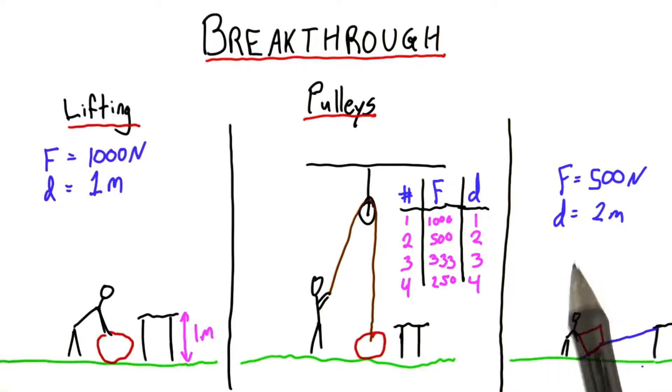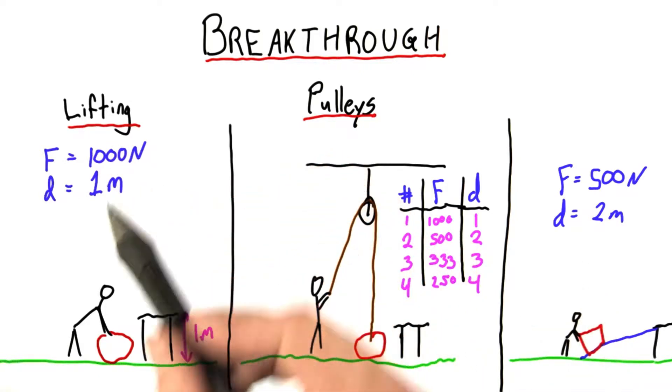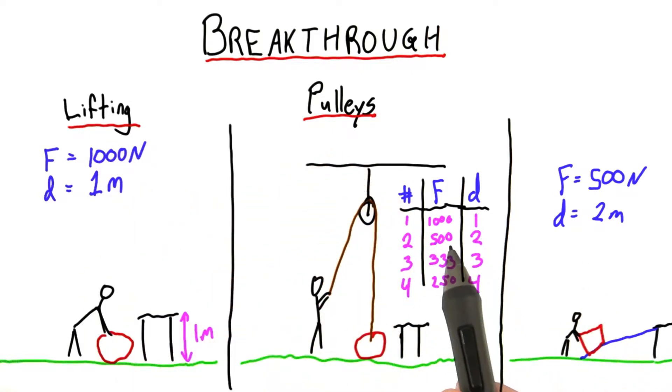There is a deep and fundamental pattern emerging here. 1,000 times 1, 1,000 times 1, 500 times 2, 250 times 4, 333 times 3, and so on.